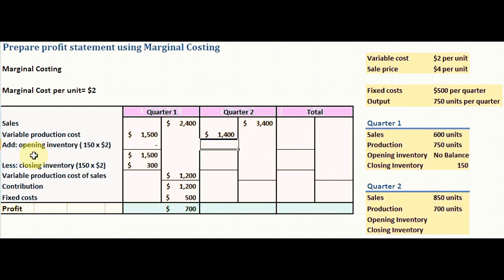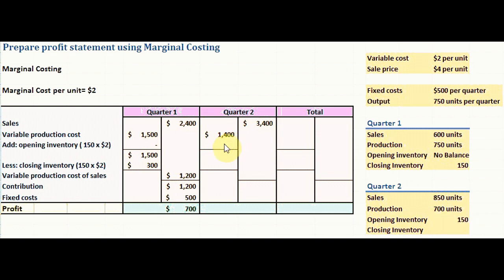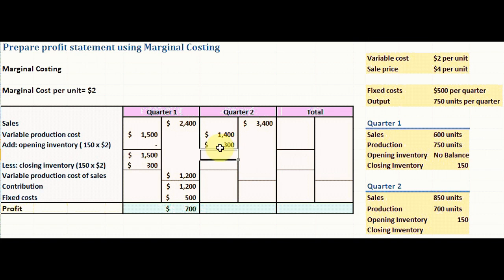The opening inventory for quarter two is the closing inventory of quarter one, which is 150 units. We multiply $150 by $2, the marginal cost per unit, giving an opening inventory of $300.